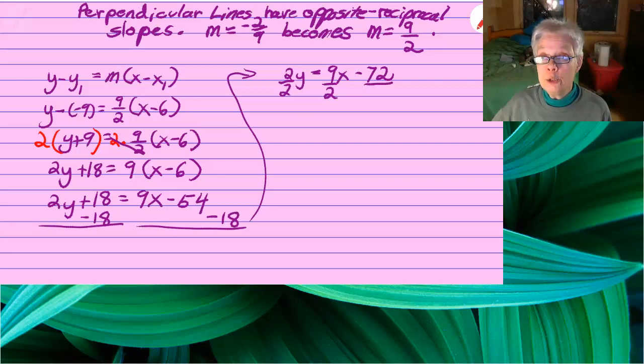Divide by 2 all the way through. And you'll have y equals 9 over 2 x minus 36.